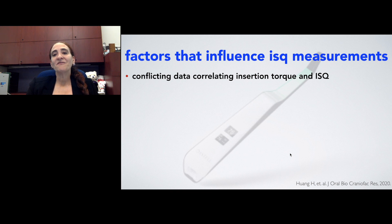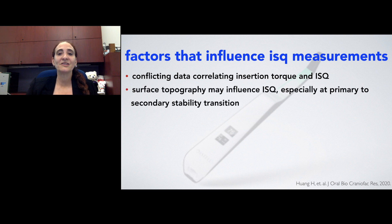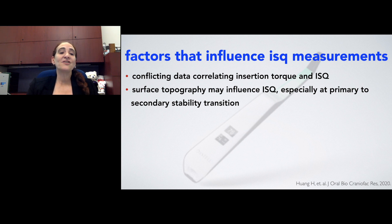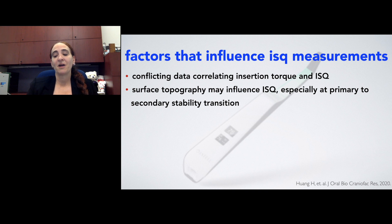Other factors that influence ISQ measurements: there is some conflicting data correlating insertion torque and ISQ values. The surface topography may influence the ISQ, especially during that transition. If we have an implant that is not roughened or enhanced, then generally that is going to be lower. And as we have a surface topography, whether it's micro or nano, then that's going to be higher.